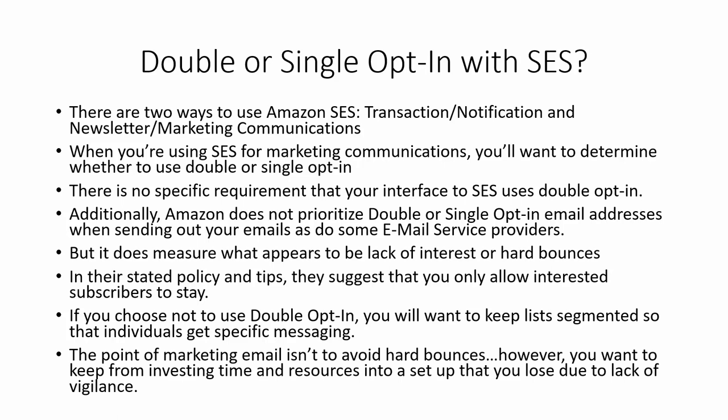The point of email marketing is not just to avoid hard bounces, but you do want to keep from investing time and resources into a system like Amazon SES and then losing it due to a few simple things you could have put in place. So if you choose not to use double opt-in, make sure that you're keeping your messaging specific and segmented.